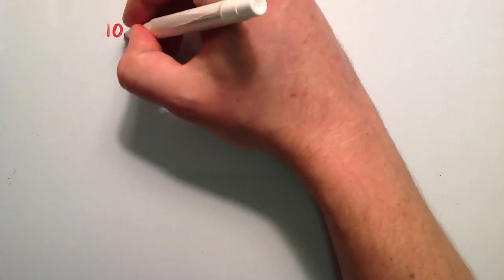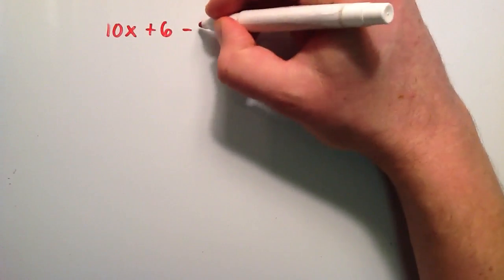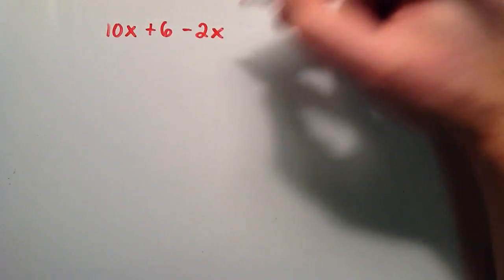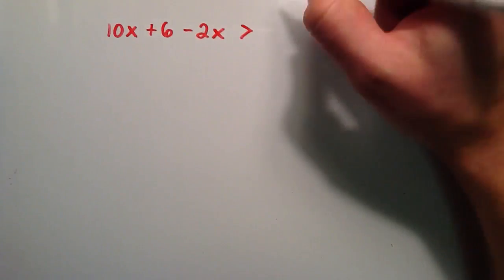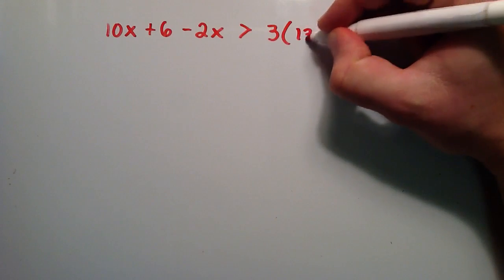So for the second example we're going to do 10x plus 6 minus 2x greater than 3 times the quantity of 13 minus x.